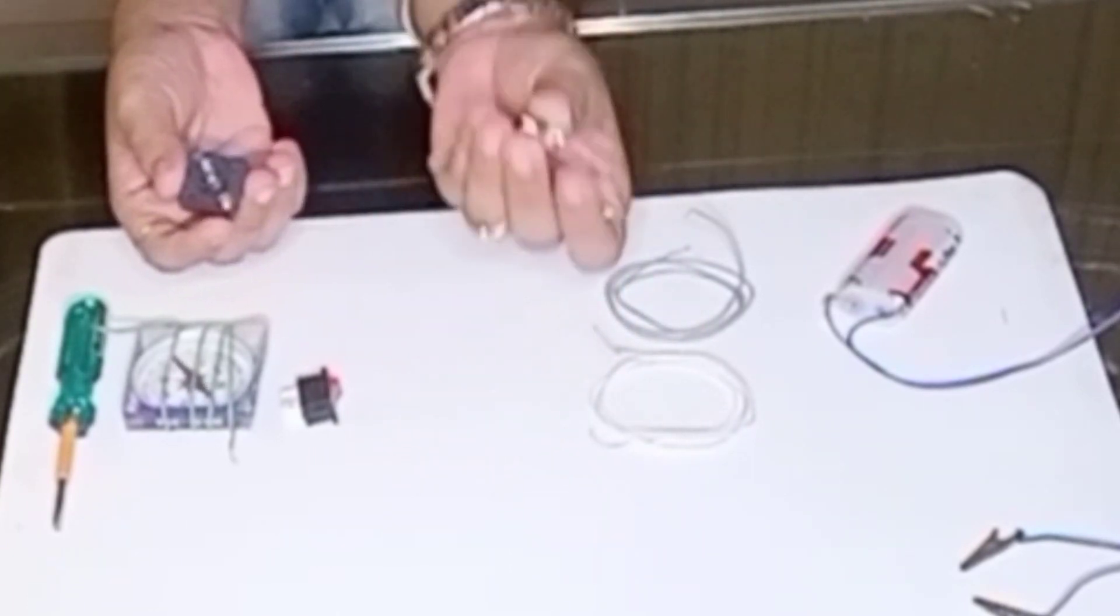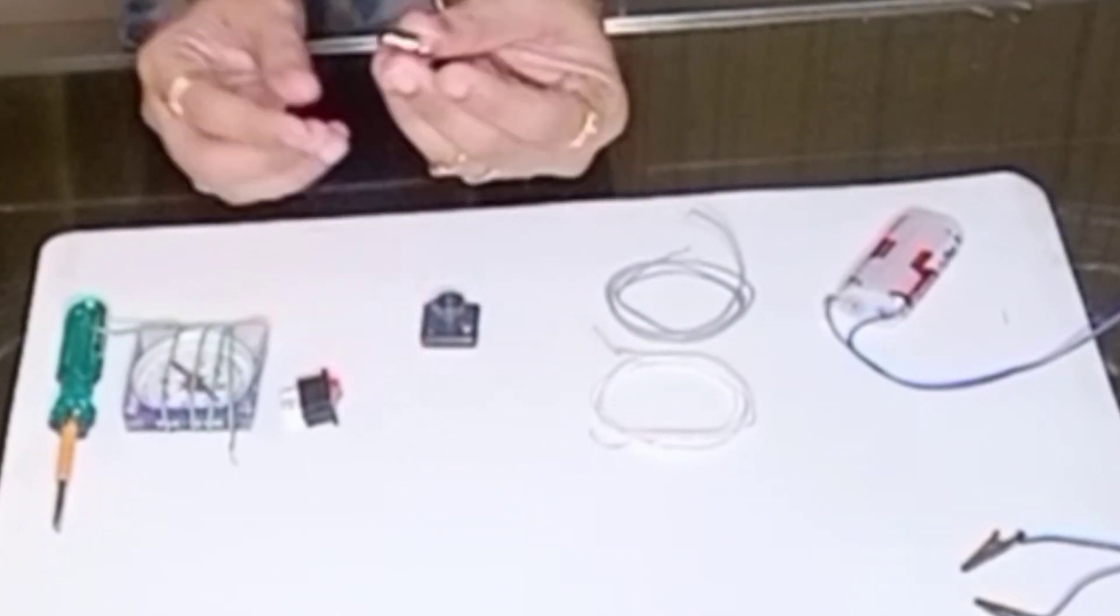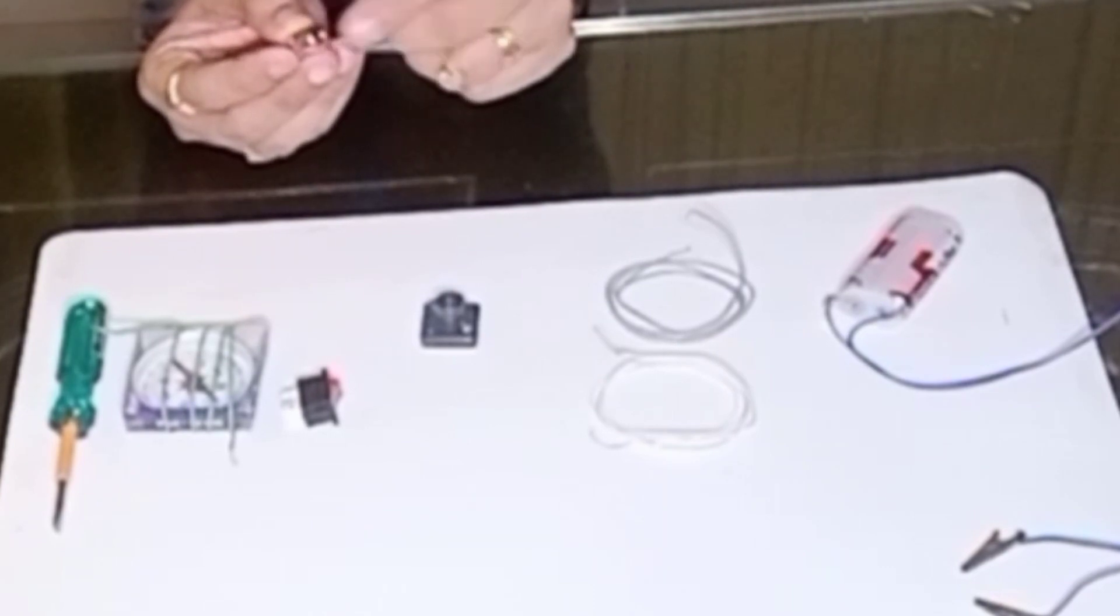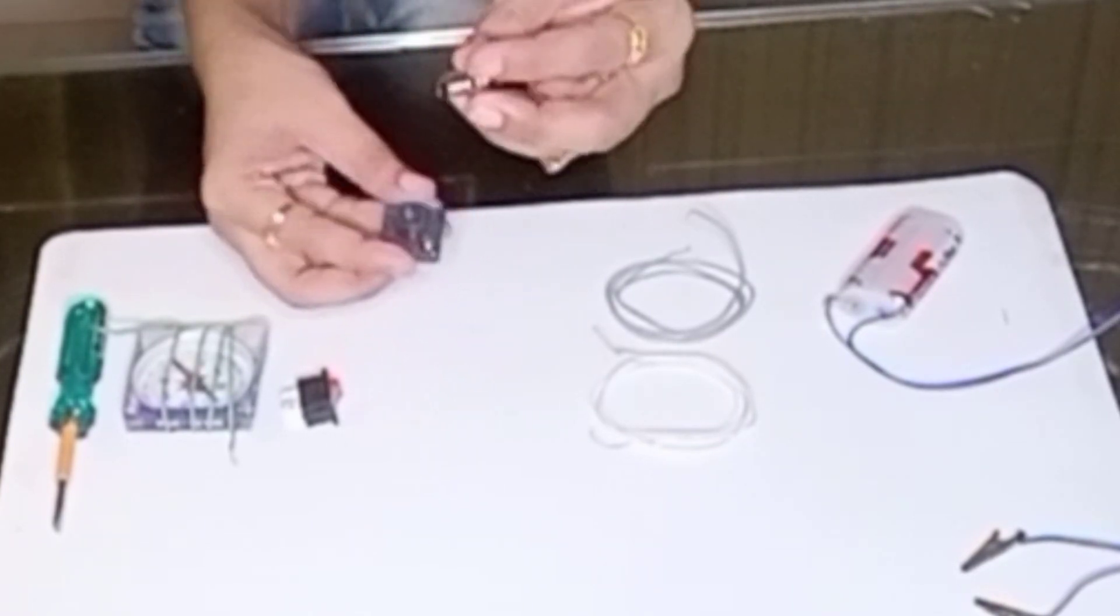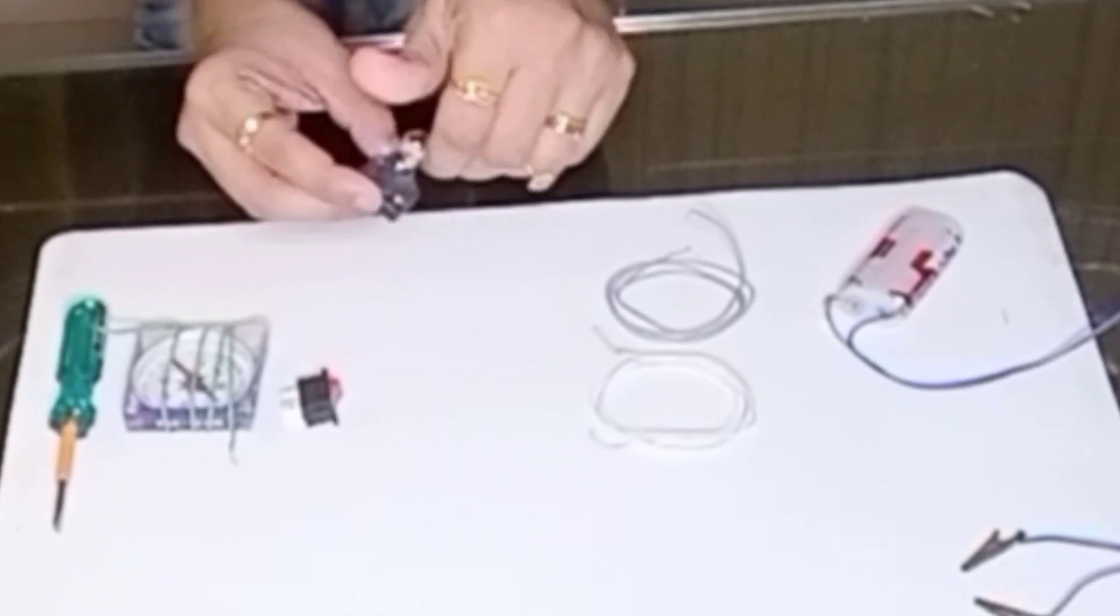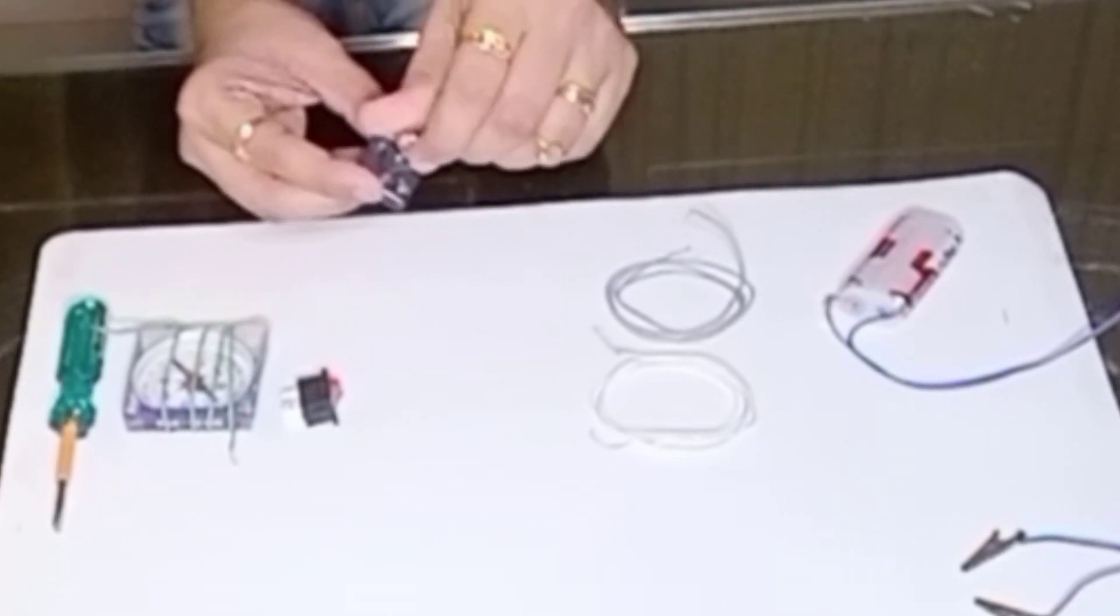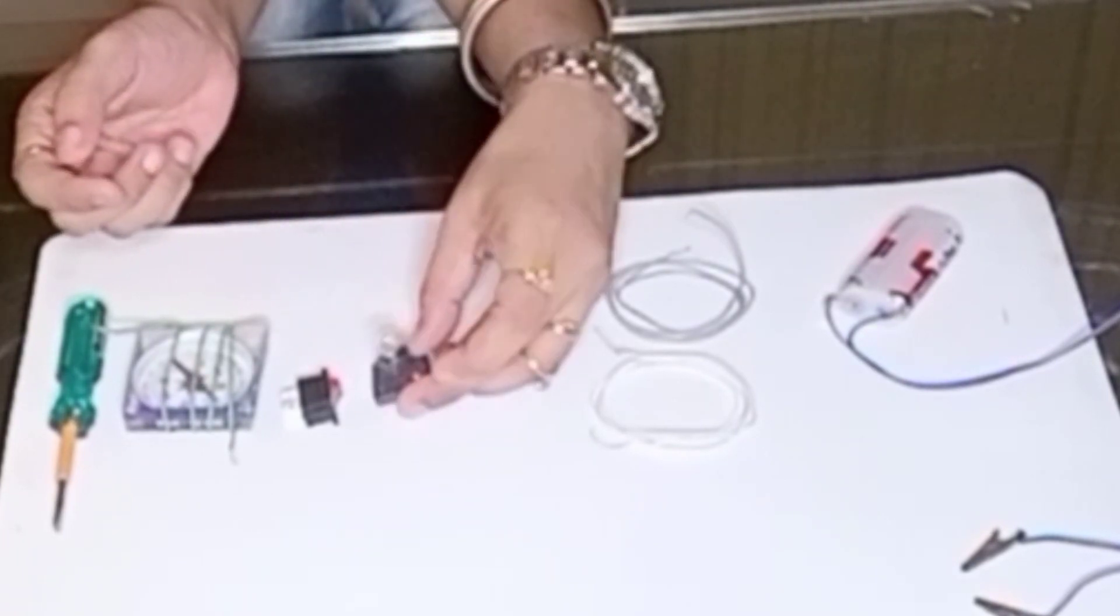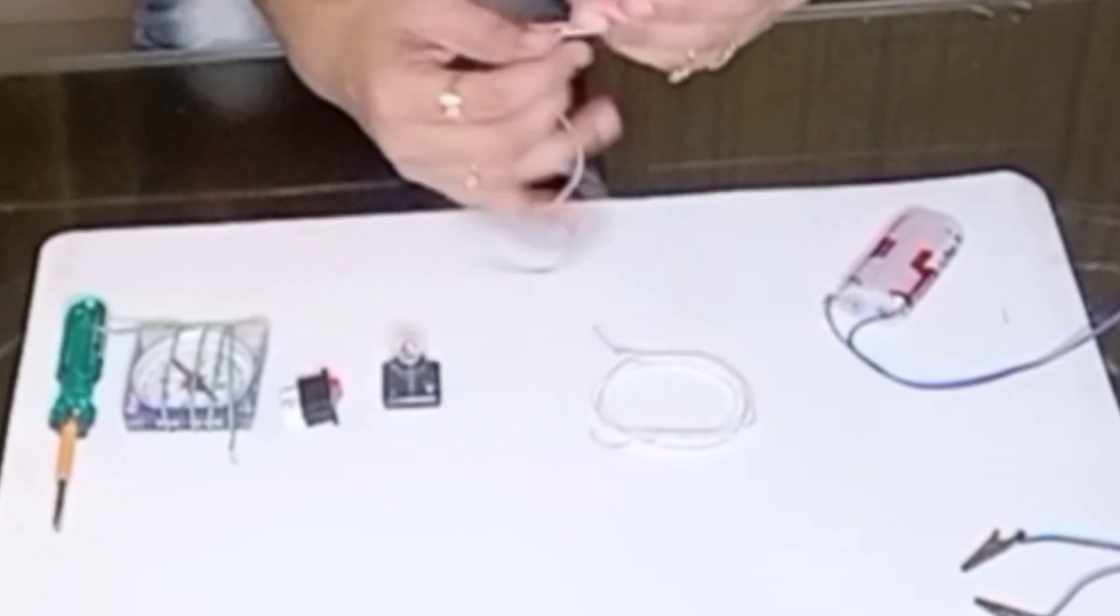Then I'll take this bulb. If you observe this bulb, this one is the positive terminal and this one is the negative terminal. Then I'm going to fix this bulb inside this bulb holder. I just twist it. I'm done with this.